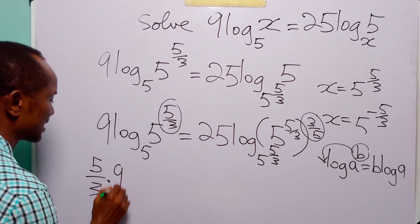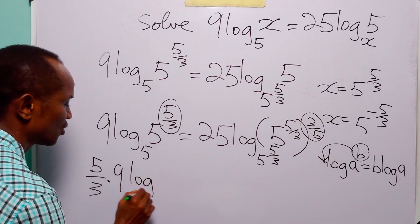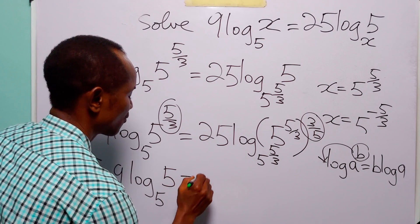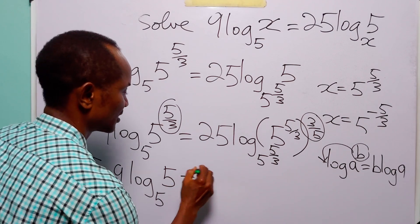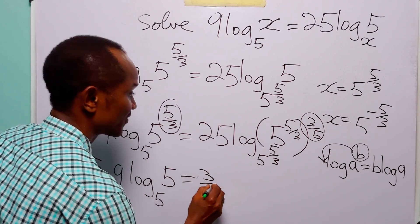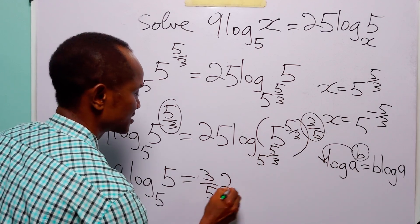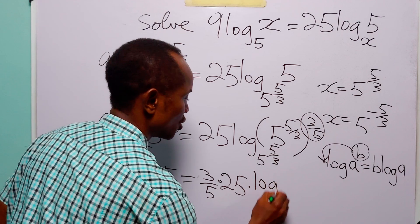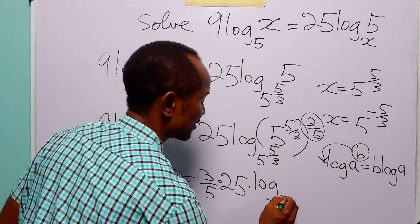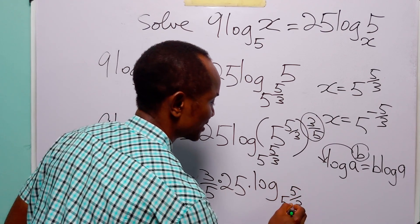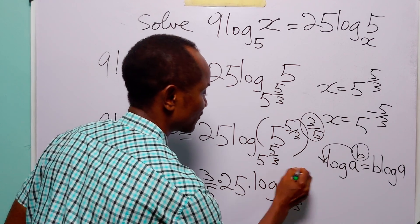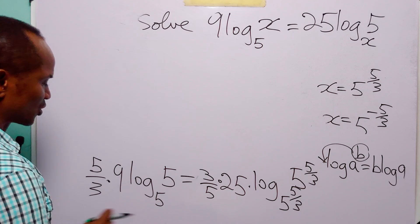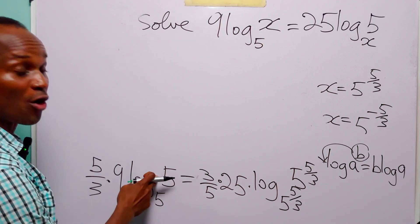...(5/3) × 9 × log base 5 of 5 = 25 × (3/5) × log base (5^(5/3)) of (5^(5/3)). Of course, we know that log base 5 of 5 is equal to 1...